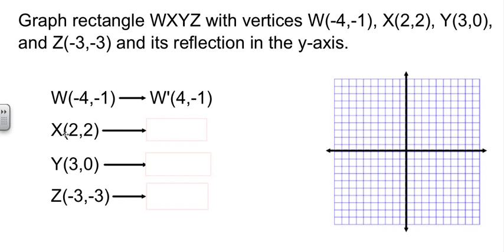x gets mapped to x prime. We're still reflecting in the y-axis, so we're changing the x sign. So we get negative 2, 2. y prime would be negative 3, 0. And z prime would be 3, negative 3. Again, I'm going to leave it to you to make the graph so you can see what the picture would look like. I'm going to trust you can plot coordinates.